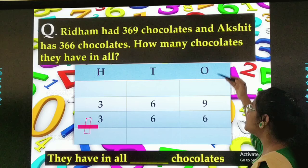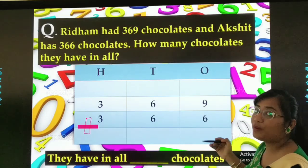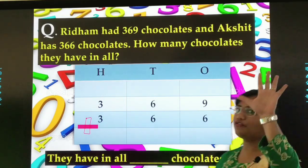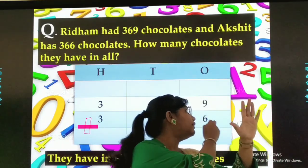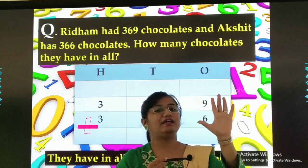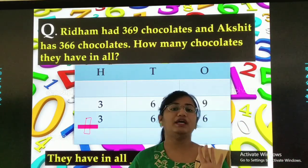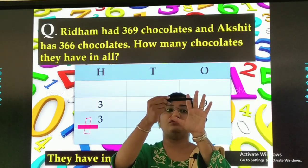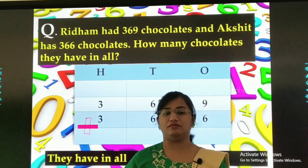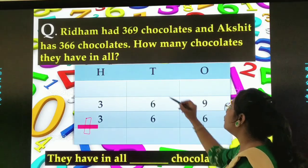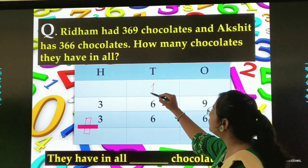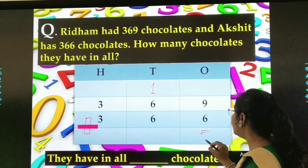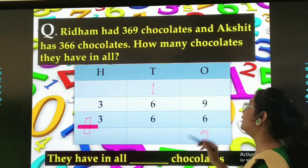We will start from the ones place. 9 plus 6 — use your fingers. See here it is written 9, now we will add 6: 9, 10, 11, 12, 13, 14, 15. So 1 will carry over here and 5 will come here.